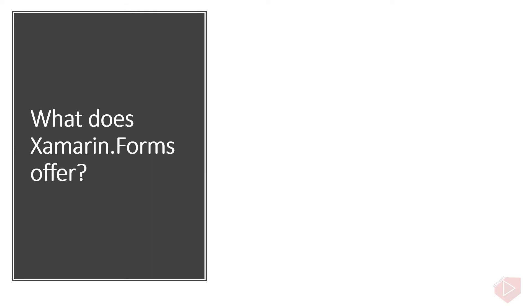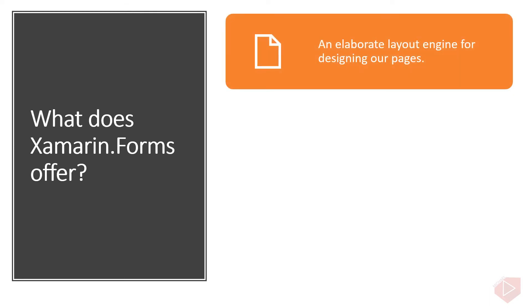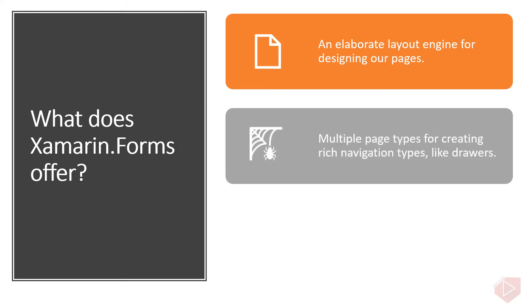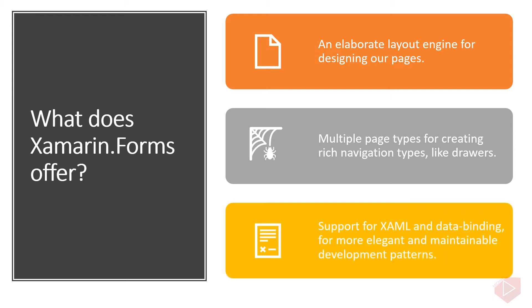What does Xamarin Forms offer? Xamarin Forms makes it easy to access common controls like buttons, text entry fields, labels, and date pickers. But individual controls aren't enough to make a good platform for creating rich apps. Xamarin Forms also gives us an elaborate layout engine for designing our pages. You can have multiple page types for creating rich navigation types like drawers, and support for XAML and data binding for more elegant and maintainable development patterns.